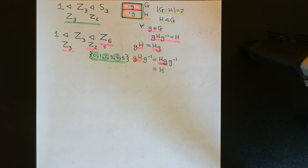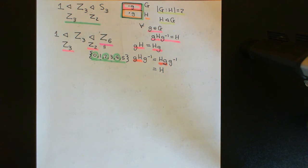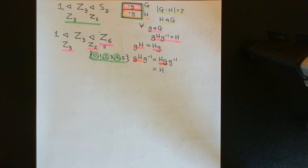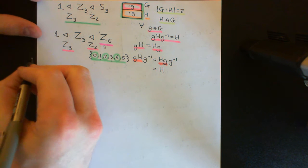Welcome back to this next video in which we are discussing composition series and the Jordan-Hölder theorem. So we've now defined what a composition series for a group is, and we've seen that all finite groups will have a composition series. What we're now going to do is study the Jordan-Hölder theorem.